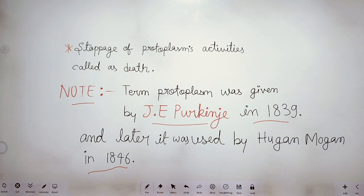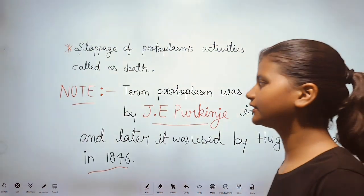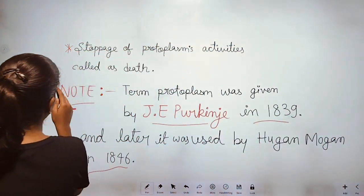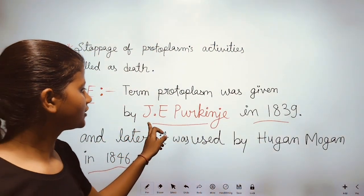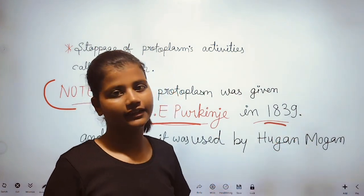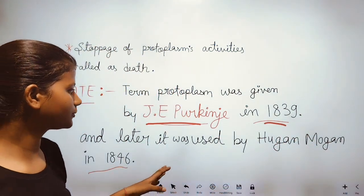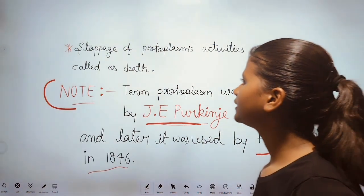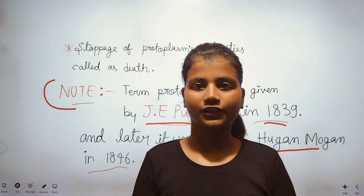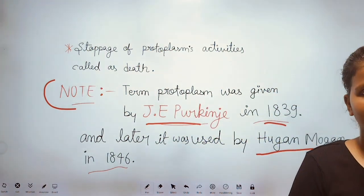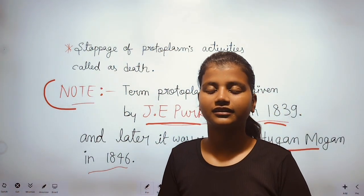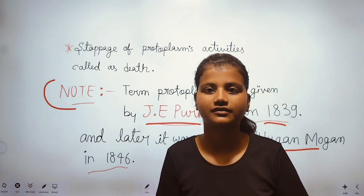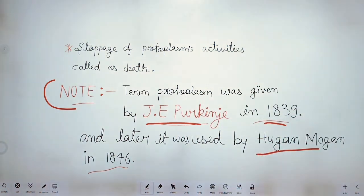The stoppage of protoplasm activities is called death. The term protoplasm was given by J. Purkinje in the year 1839 and later used by Hugo von Mohl in the year 1846. In the next video we will discuss the issue of the cell. Thank you, have a nice day.